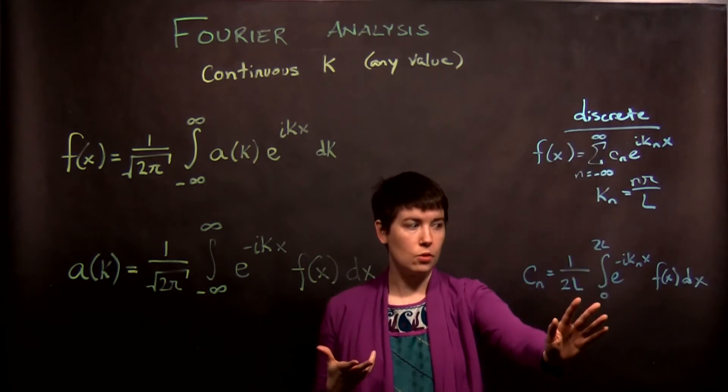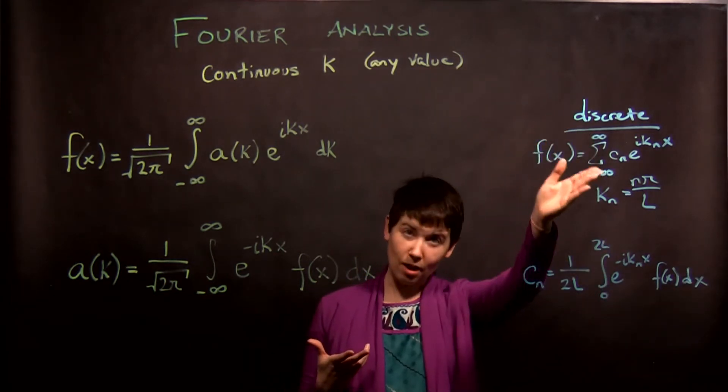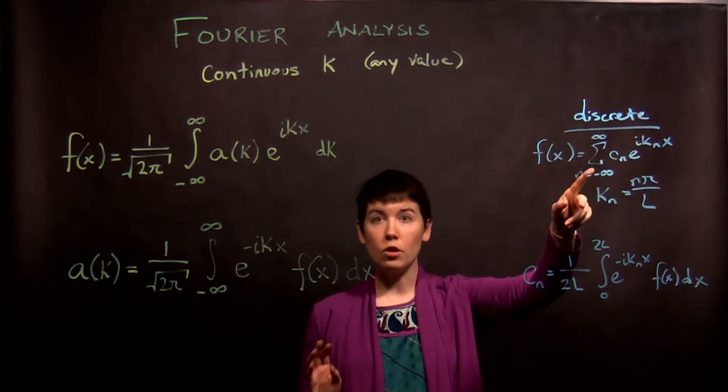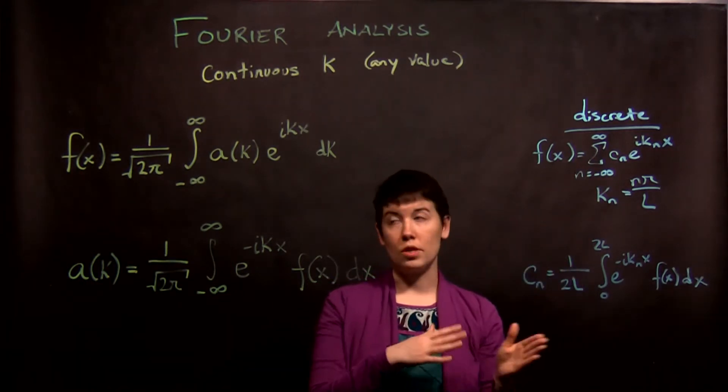So this is what we just did, the discrete values. We build our function out of a sum of all of our possible e to the ikx's where they each have their own coefficient. Now notice that this is an infinite sum, but it's still a discrete sum.